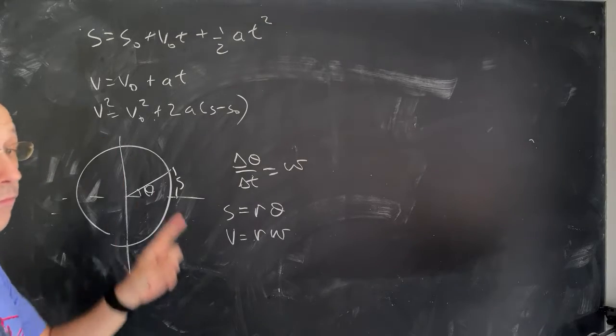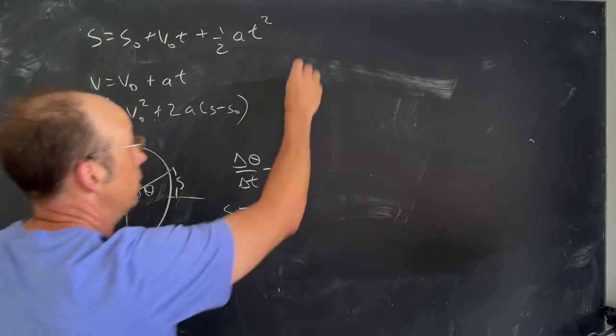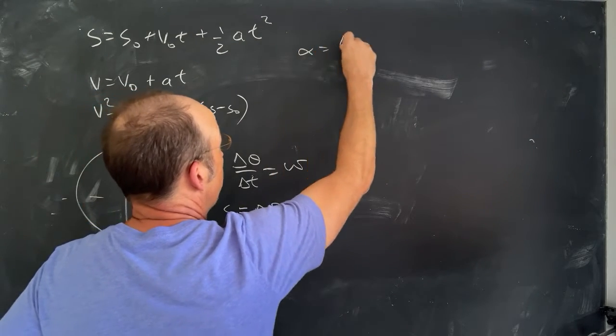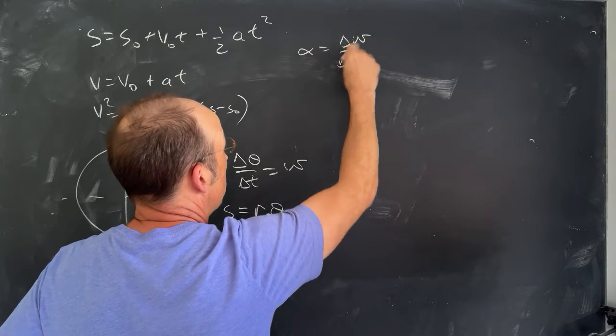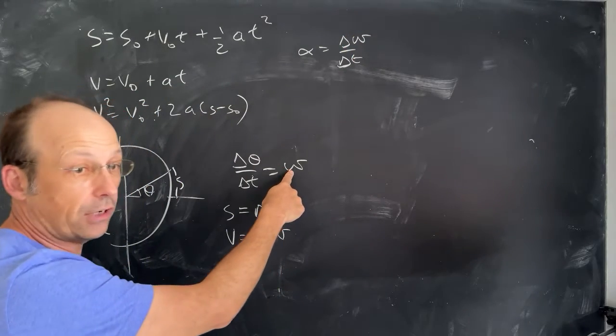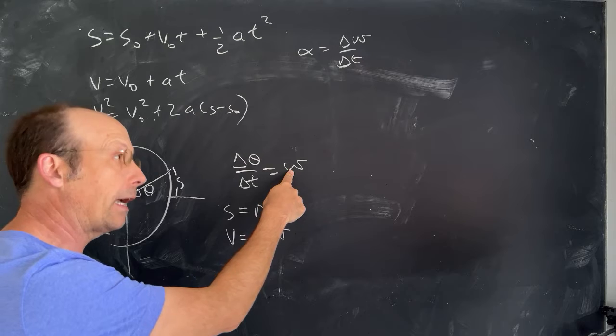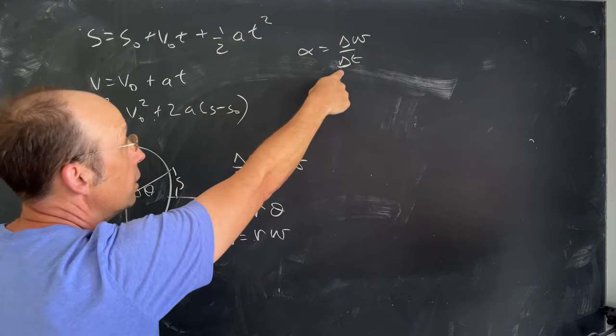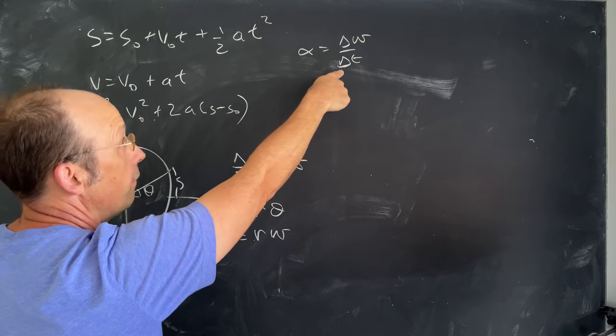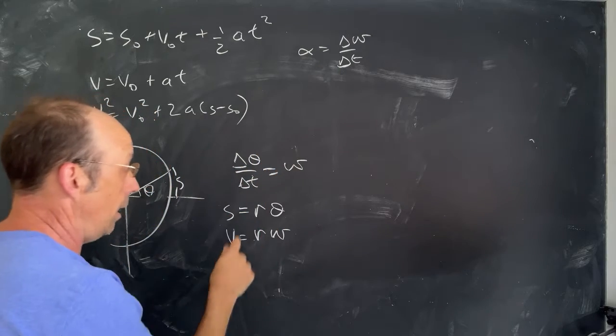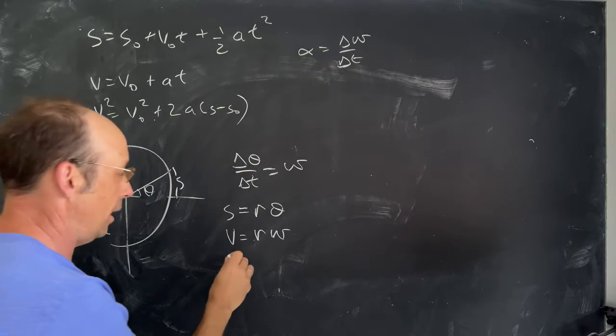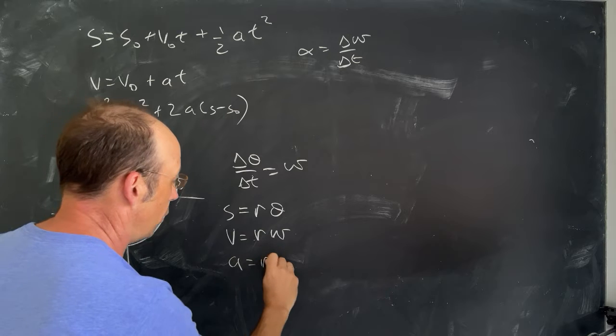And finally, we have what we call angular acceleration. Alpha is the rate of change of omega. A reminder, that's the Greek letter omega. It looks a lot like a W, but it's omega, lowercase omega. So alpha is the rate of change of the angular velocity. And so we can do the same thing in terms of velocity. A = Rα.